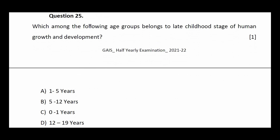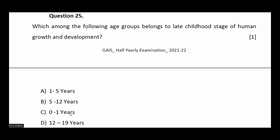Question number twenty-five: which among the following age groups belongs to the late childhood stage of human growth and development? Options: 1 to 5 years, 5 to 12 years, 0 to 1 years, or 12 to 19 years. The answer is 5 to 12 years.